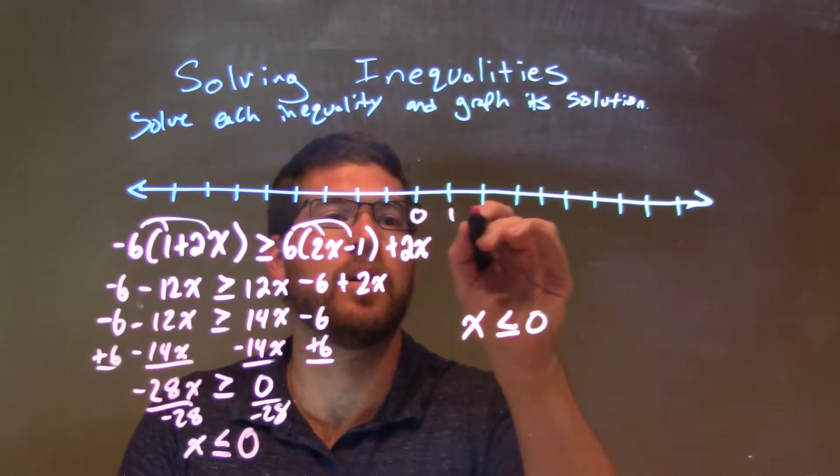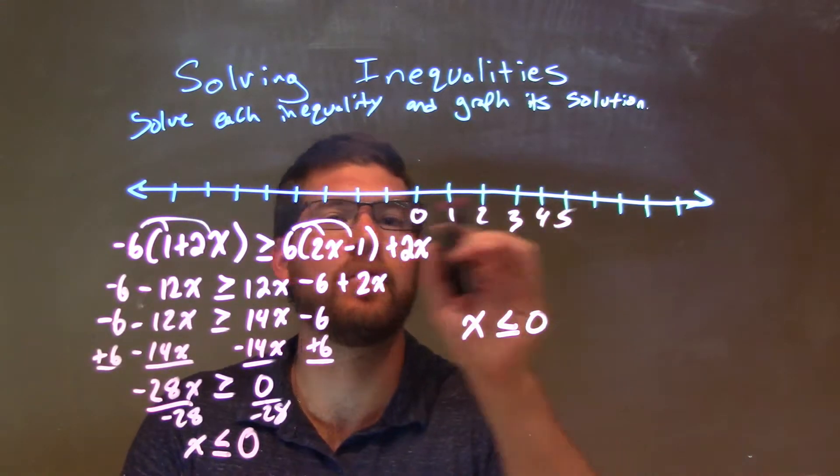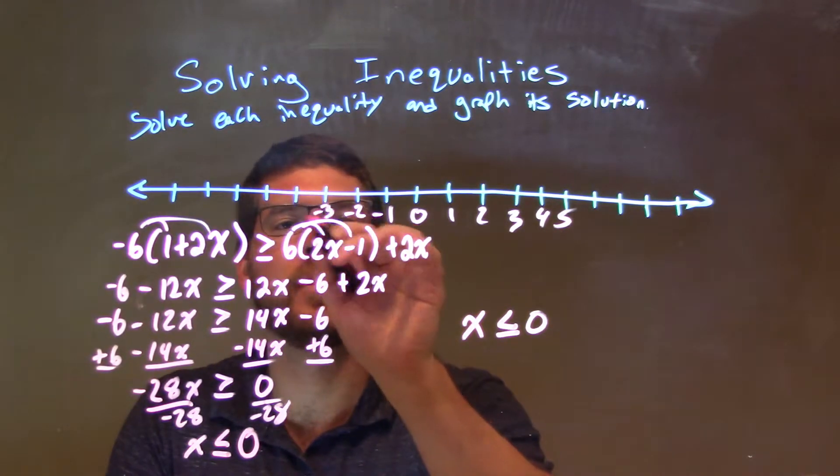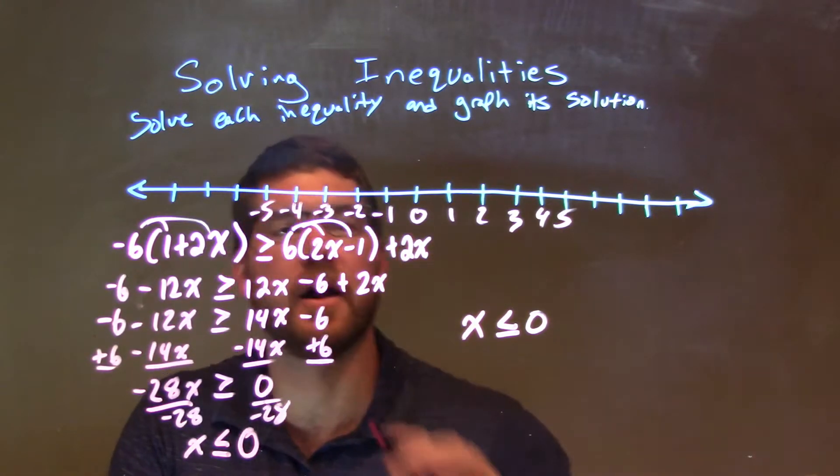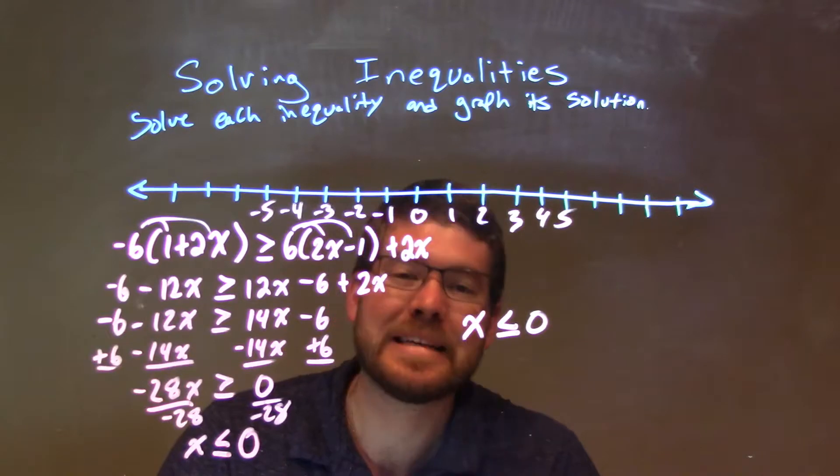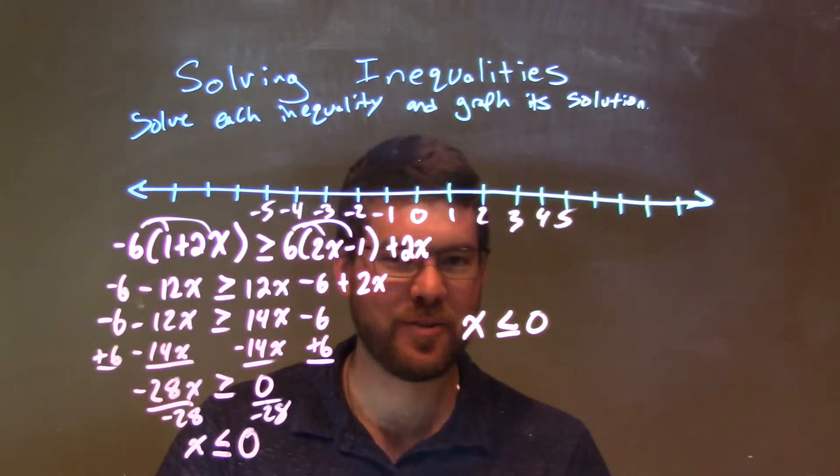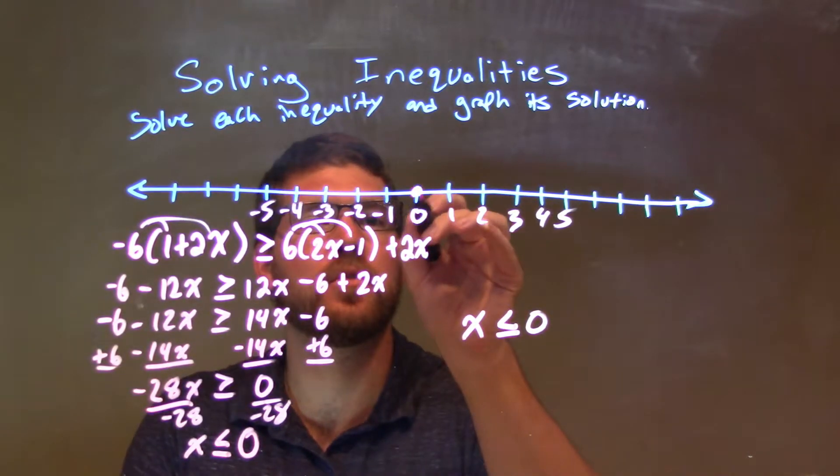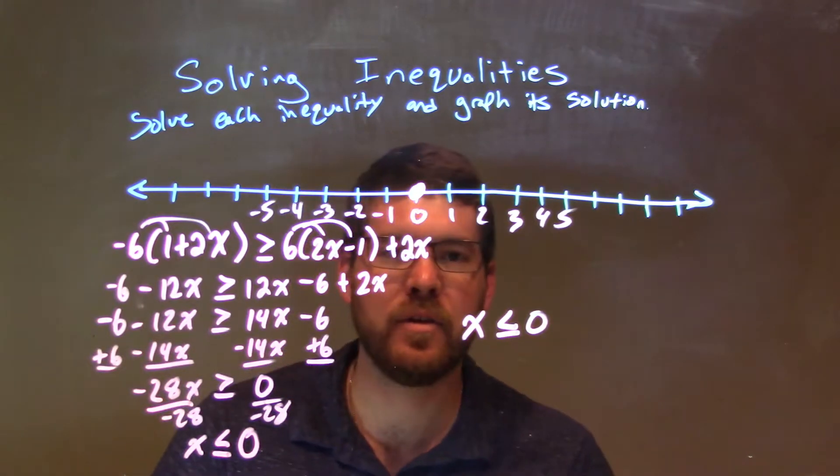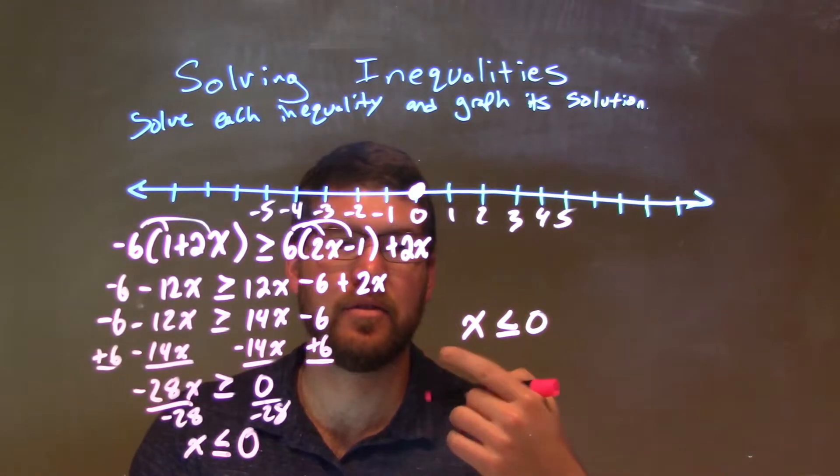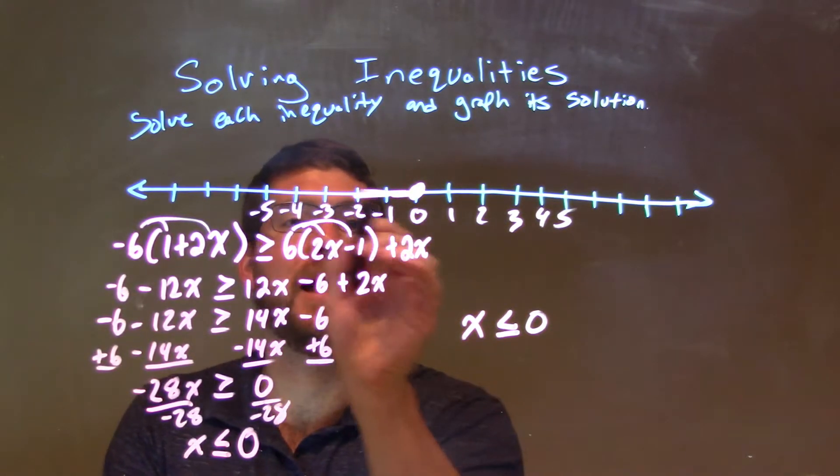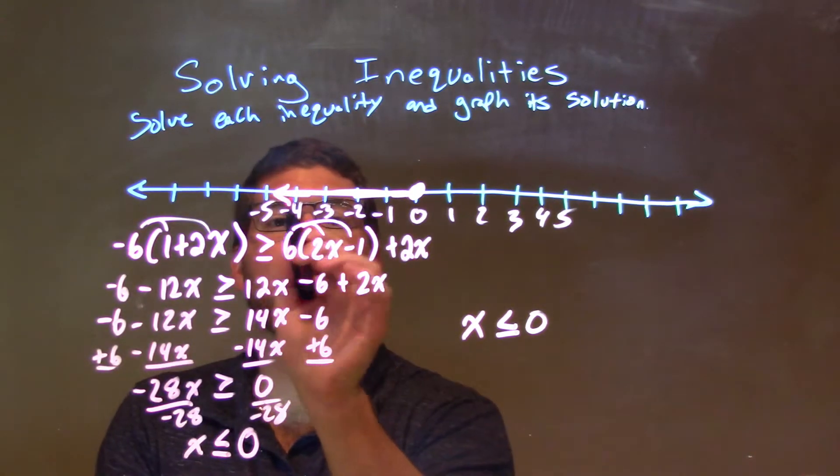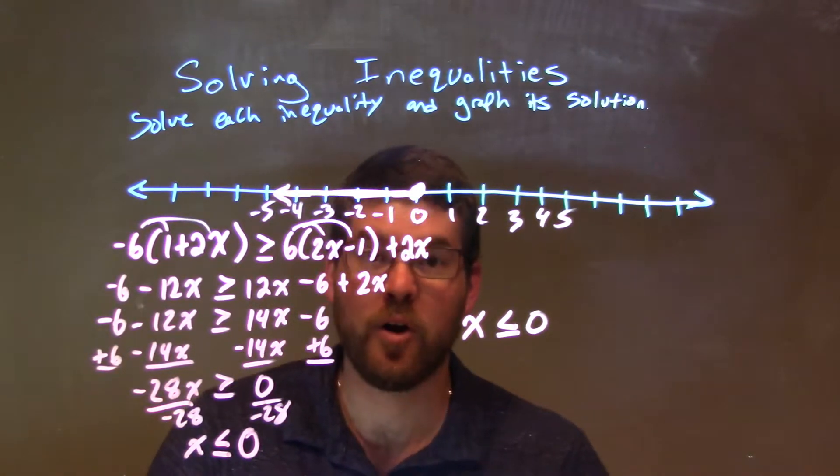Let's go graph that. Let's put 0, 1, 2, 3, 4, 5, negative 1, negative 2, negative 3, negative 4, and negative 5. Well, as x is less than or equal to 0, we have a closed circle right here at 0. And then, x is less than 0, so we shade to the left. And there we have our final answer.